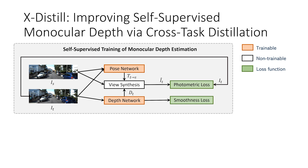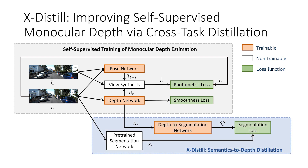First, we introduce xDistil, which enhances the self-supervised training of monocular depth networks by utilizing semantic information. Specifically, it leverages a pre-trained semantic segmentation teacher network and transfers the semantic knowledge from the teacher to the depth network. Accurate semantic information is provided by our state-of-the-art segmentation network. By performing such cross-task distillation, we can significantly improve self-supervised monocular depth estimation. Notably, xDistil only modifies the training process and requires no additional computation cost during inference.